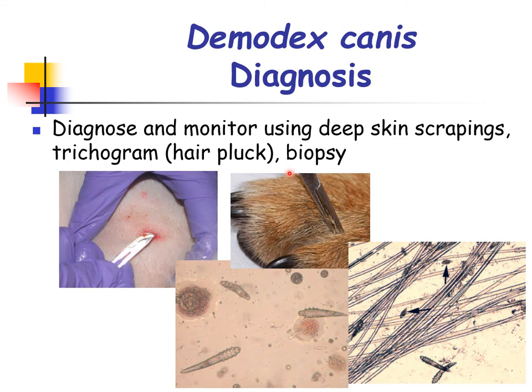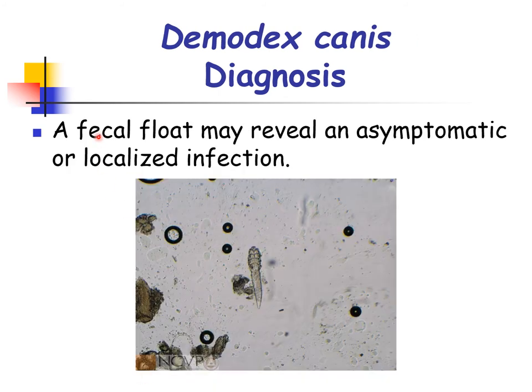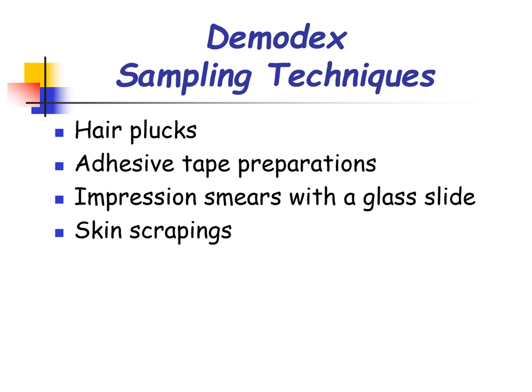Demodex canis is diagnosed and monitored using deep skin scrapings, trichogram or hair pluck, as well as biopsy. Diagnosis can also be done through fecal flotation, revealing an asymptomatic or localized infection. It is suggested that several procedures be performed sequentially on an affected dog to maximize success in finding the parasite. Hair plucks are a simple technique that may show mites in hair follicles and are useful in areas where more invasive techniques could cause damage, such as the feet and periocular regions.